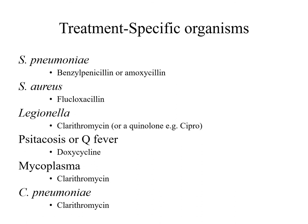Drug of choice summary for respiratory pathogens: Streptococcus pneumoniae—benzylpenicillin or amoxicillin; Staphylococcus aureus—flucloxacillin; Legionella—clarithromycin or ciprofloxacin; Q fever—doxycycline; Mycoplasma—clarithromycin; Chlamydia pneumoniae—clarithromycin.